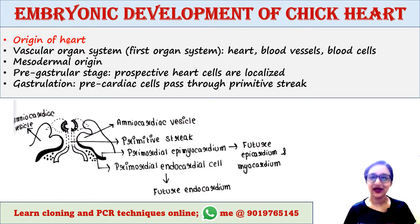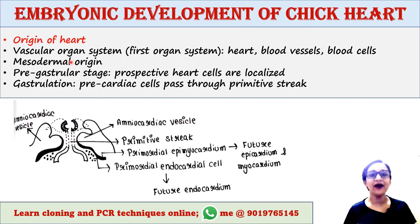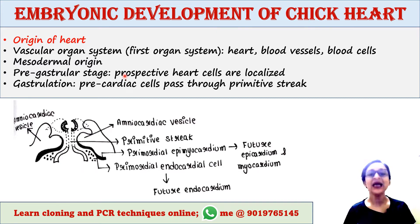Among various organ systems, the vascular system is the first organ system that is developed in any vertebrate embryo. This is not really surprising, because in a developing embryo all tissues and organs require oxygen, and the vascular system — which consists of the heart, blood vessels, and blood cells — does that job.